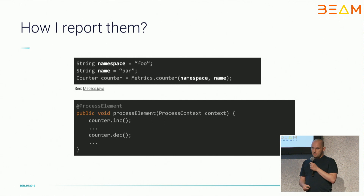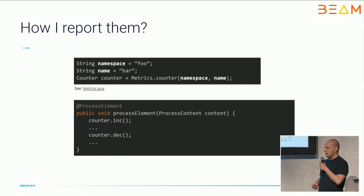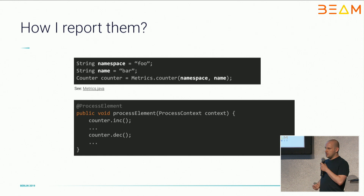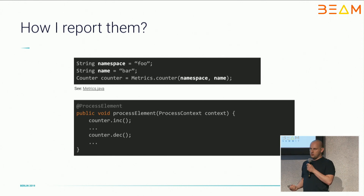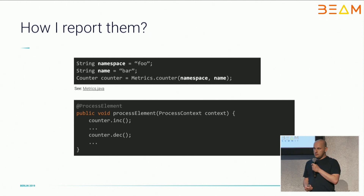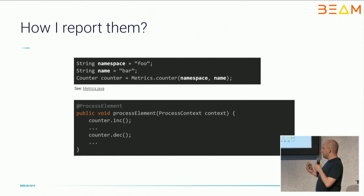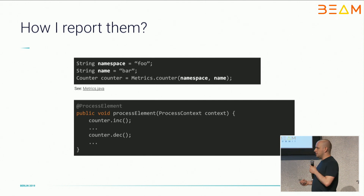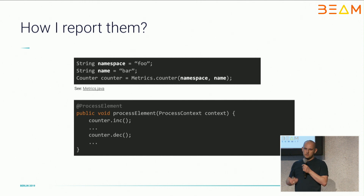Now let's fly briefly through some facts about using the Metrics API. First, you define a namespace to distinguish things and group related metrics together. Then you define a name and choose a type — in this case, a counter. After you've created that, you can use that interface practically anywhere in your pipeline: in a processElement method, in a startBundle method to measure something about bundles, or in a finishBundle, and so on.